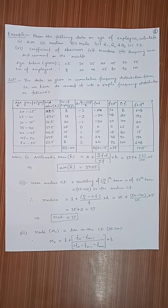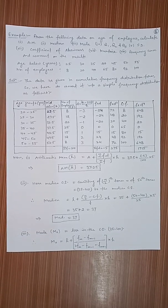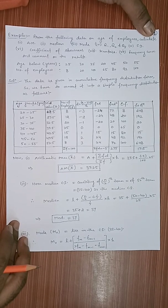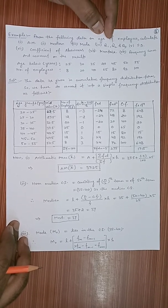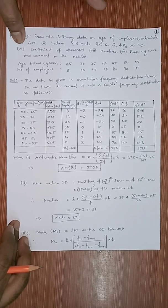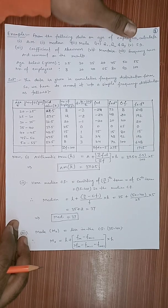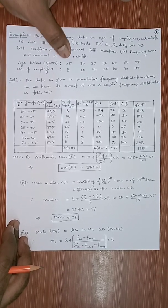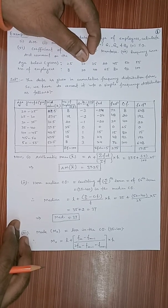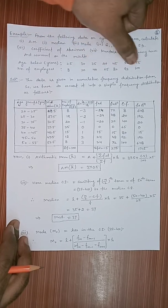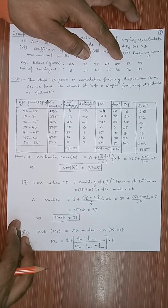Hello my dear students, hope you are doing well. As I promised, I'm making a video of a problem based on descriptive statistics. Here I have taken a problem: from the following data on age of employees, calculate arithmetic mean, median, mode, quartiles Q1, Q2, Q3, standard deviation, coefficient of skewness, kurtosis, frequency curve, and comment on the result. We are given cumulative frequencies — below 25 years there are 8 employees, below 30 years there are 20, and so on up to 100 employees total. The data is given as cumulative frequency, so we have to convert it into a simple frequency distribution.